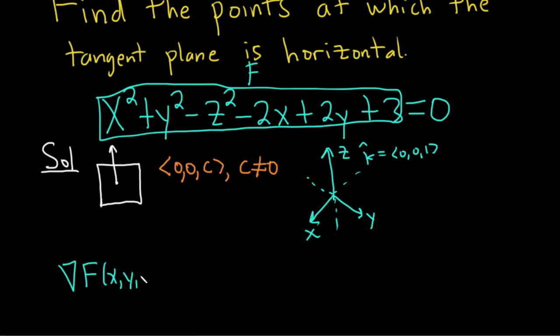So let's write that out very carefully. The gradient of big F is going to be Fx at (x,y,z), first partial with respect to x, Fy, which is the partial with respect to y at (x,y,z), and lastly, the partial with respect to z at (x,y,z). These are partial derivatives.